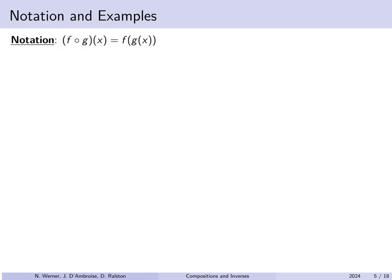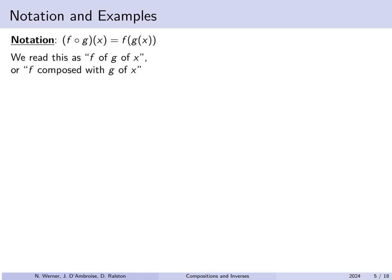The notation for a composition of functions: you can either write g(x) plugged into f, or use the open circle notation. You read it as f of g of x, also said as f composed with g of x.